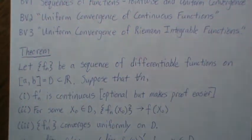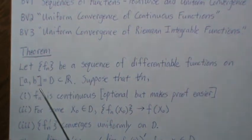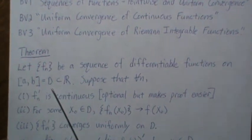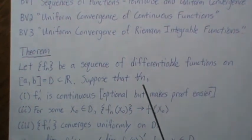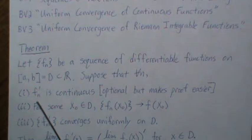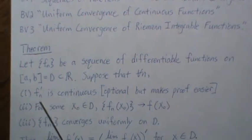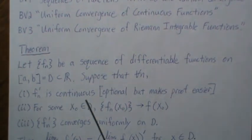Now the theorem is that we have a sequence of functions that are all differentiable functions on some set [a,b] = D ⊂ ℝ. And suppose that for all n we have the following: that the first derivative of each of our f_n is continuous.